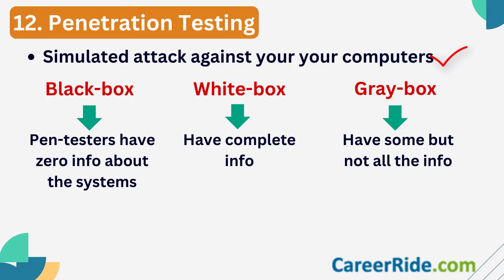The information pen testers have before beginning depends on the scope decided. In black box testing, the pen testers have zero information about the system — they pose as real-world hackers, do their own research, devise their own plan, and execute the attack and report. In white box testing, they have complete information about the system. In grey box testing, it is a mix of the above two — they have some information but it is limited.